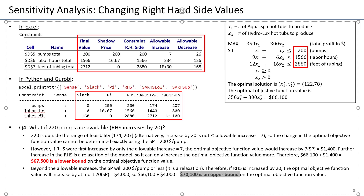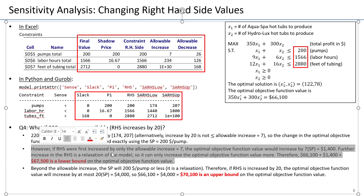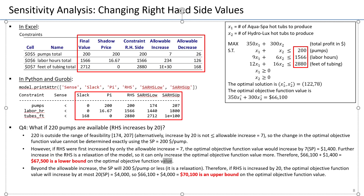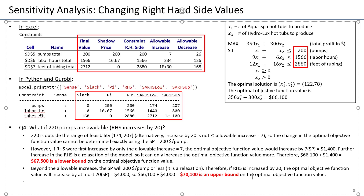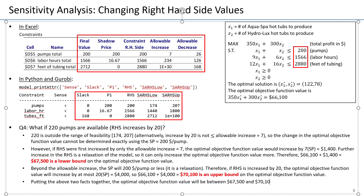From considering just the first seven pumps, we get a lower bound on the optimal objective function value. And from considering all 20 pumps at $200 — perhaps overestimating their value — we get an upper bound. Putting the above two facts together, the optimal objective function value will be somewhere between $67,500 and $70,100. We don't know how much it will be exactly, but it will be somewhere between those two.